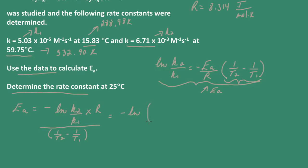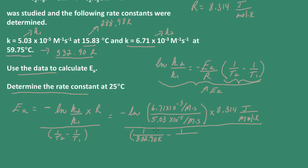I have the natural log of K2, which is 6.71 times 10 to the negative 3 per molar per second, divided by K1, which is 5.03 times 10 to the negative 5 per molar per second. We'll multiply by R, 8.314 joules per mole per Kelvin. Let's do our denominator. We have 1 over T2, so that corresponds to K2, that's 332.9 Kelvin, minus 1 over the temperature that corresponds to K1, which is 288.98 Kelvin.